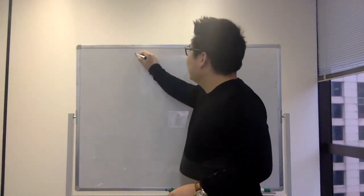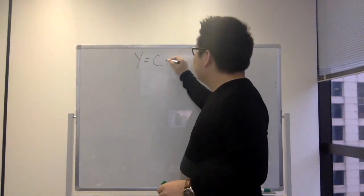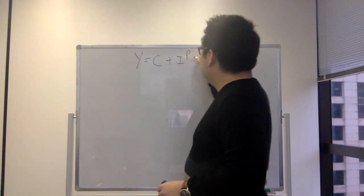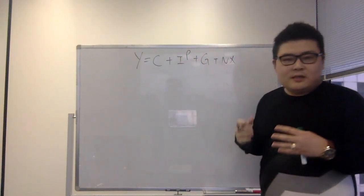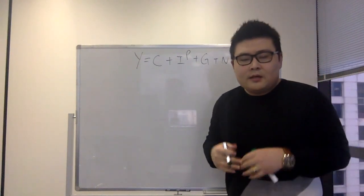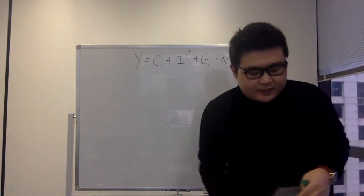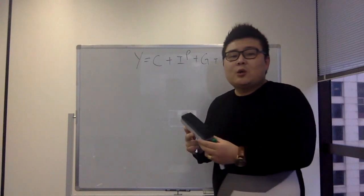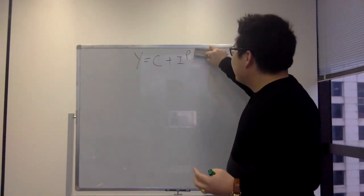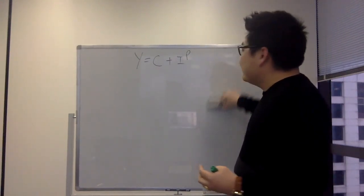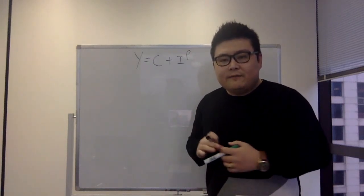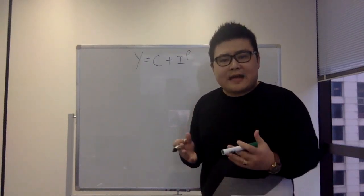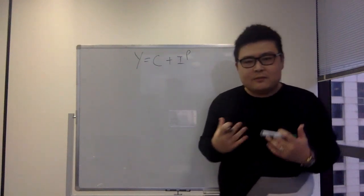What exactly is a Keynesian two-sector model? First of all, output is equal to C plus IP plus G plus net export — this is the national accounting identity, and this is our famous four-sector model. If we only include a two-sector model, this means that we only look at consumption and planned investment. Under the Keynesian 45-degree diagram, how exactly do we capture this model?